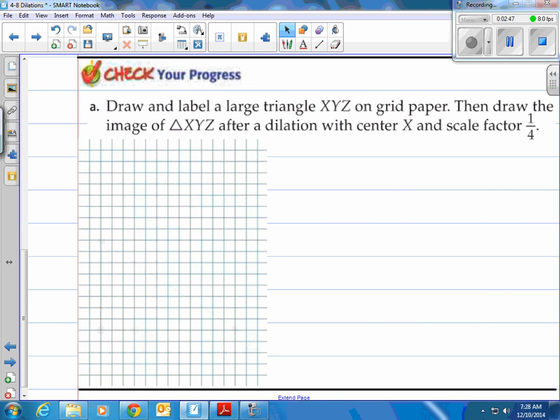Draw and label a large triangle. Now here's the thing, I'll actually do this for you because you probably don't have graph paper there, so just watch me do this. Draw and label a large triangle XYZ on grid paper, then draw the image of the triangle XYZ after a dilation with center X and scale factor one-fourth. So watch what I do here.